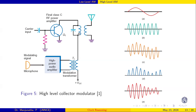Since it is class C, it conducts only the positive half cycle. What about the negative cycle? During the negative cycle of the signal, energy is stored — the waveforms are similar to those of a diode and transistor amplifier. At the output, the tuned circuit has a capacitor which discharges with reverse polarity. In this way, the high-level collector modulator works.